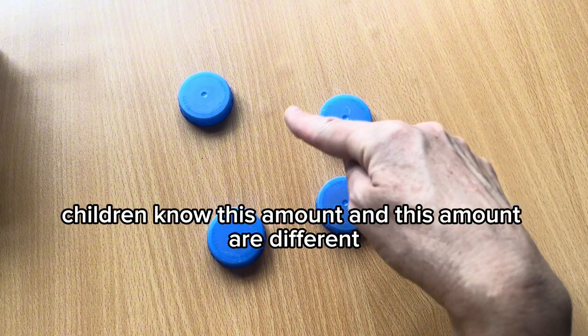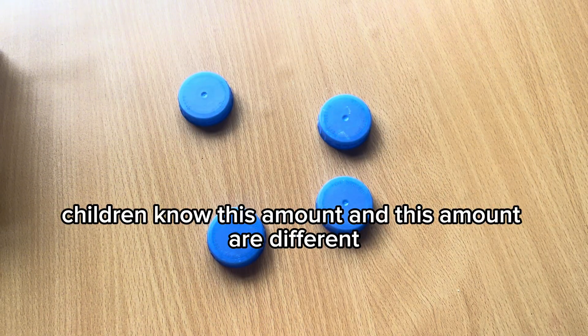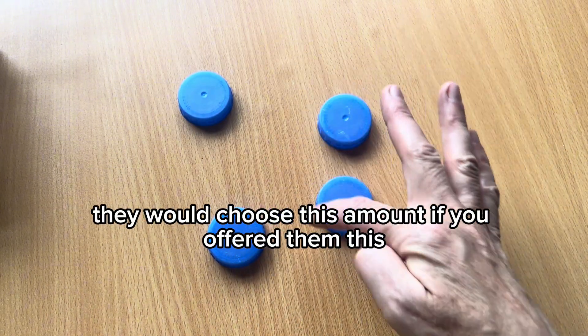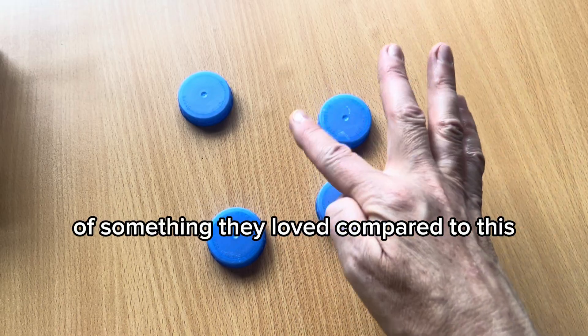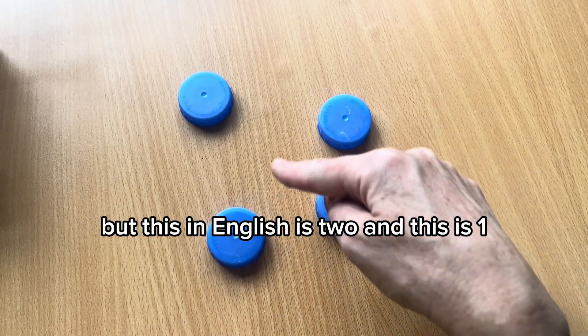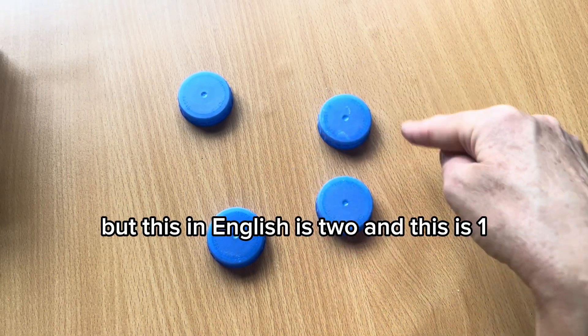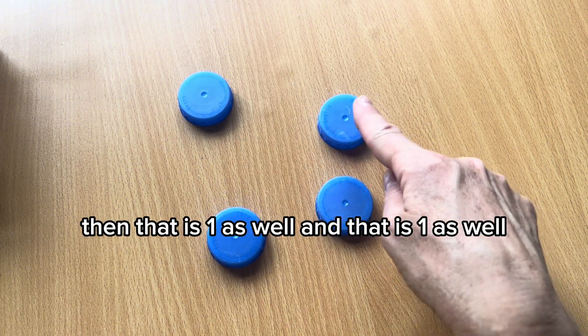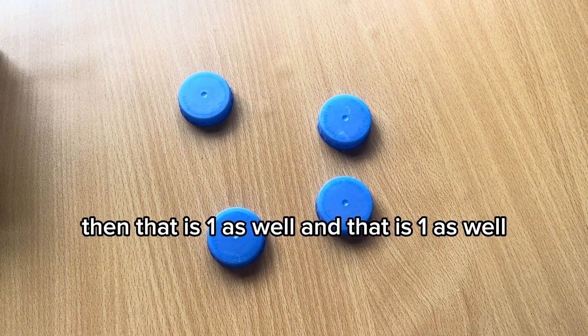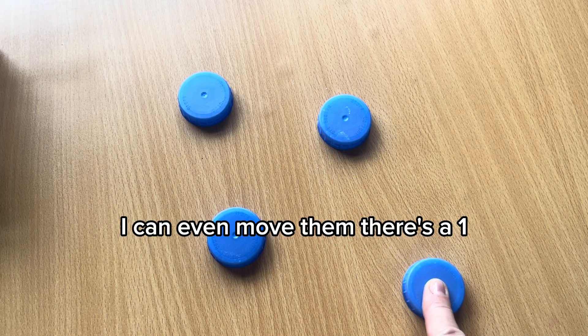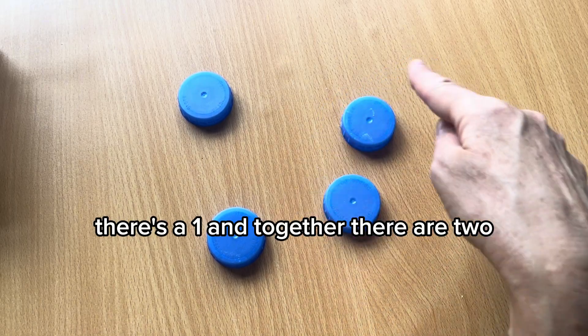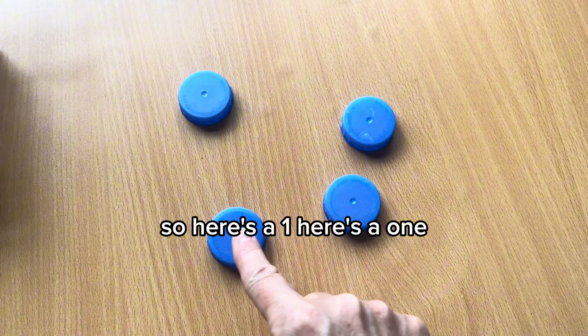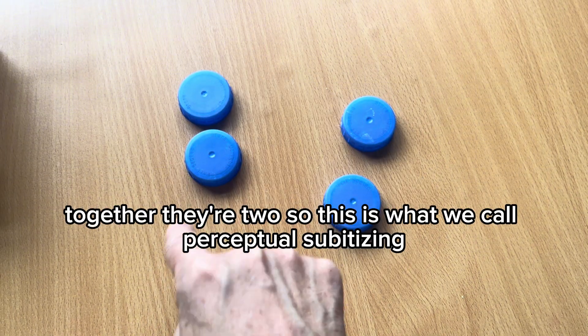What we see here, children know this amount and this amount are different. They would choose this amount if you offered them this as something they loved compared to this. But this in English is two and this is one and this is one. And if that is one, then that is one as well. And that is one as well. I can even move them. There's a one. There's a one. And together there are two. So here's a one. Here's a one. Together there are two.